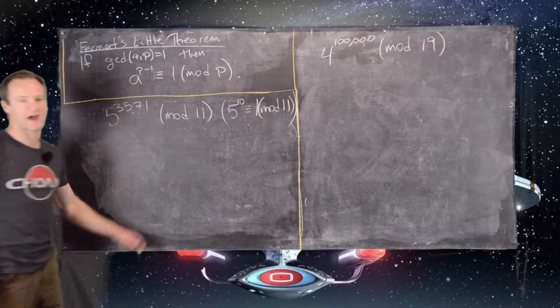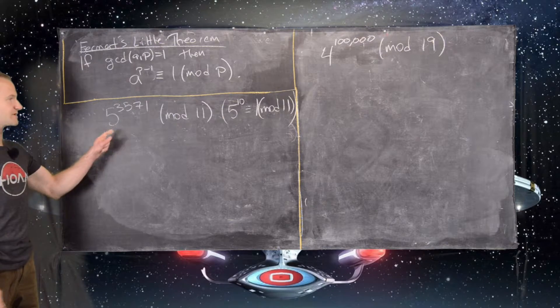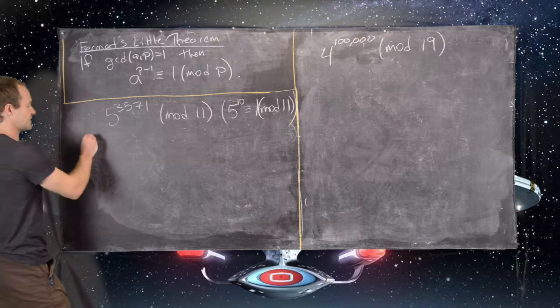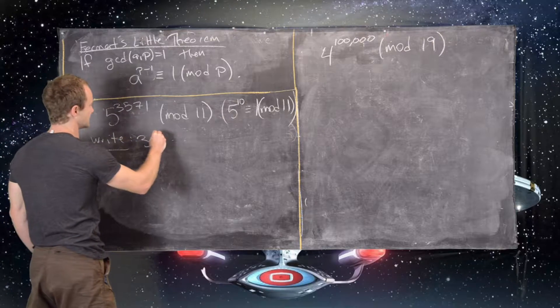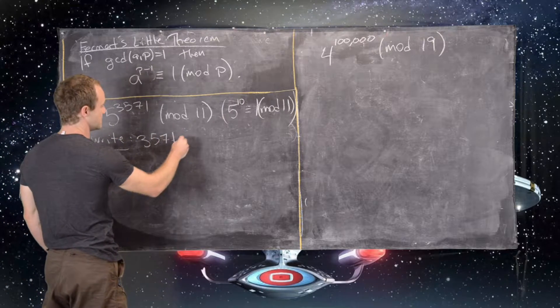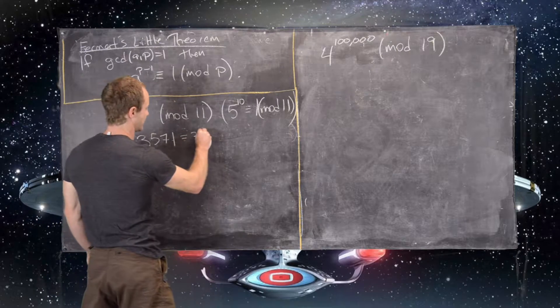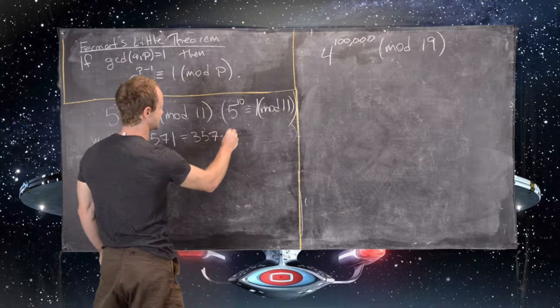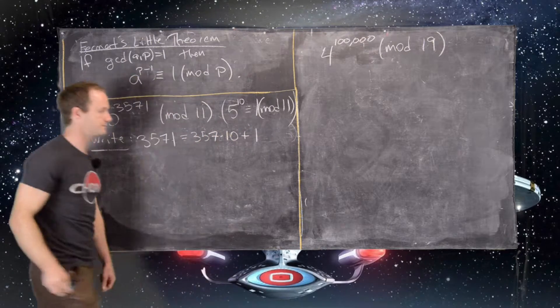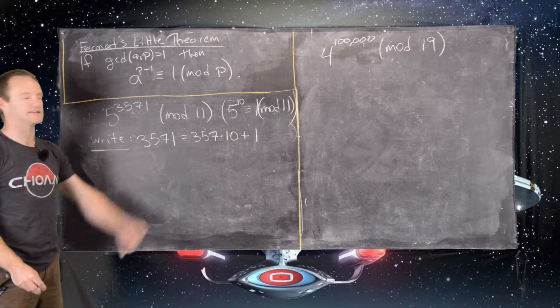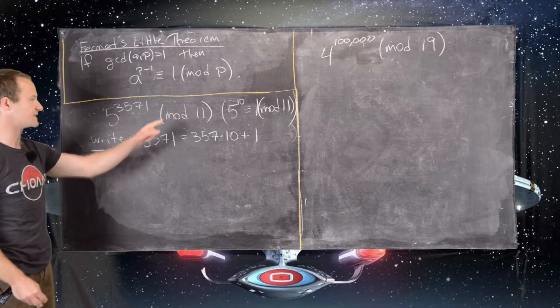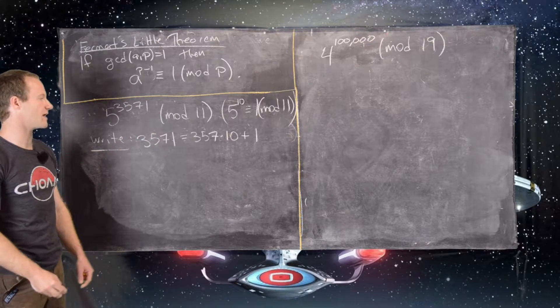So we're going to use that fact along with the division algorithm to simplify this. So the first thing that we'll do is we'll write 3571 as 357 times 10 plus 1. So the division algorithm with 3571 and 10, and 10 because 10 is 11 minus 1, our prime minus 1.